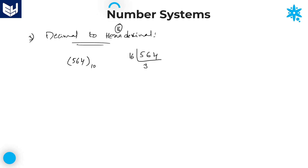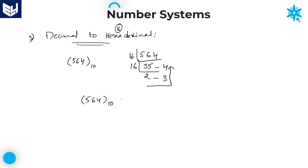564 divided by 16 is 35 remainder 4. Then 35 divided by 16 is 2 remainder 3. Write the remainders from bottom to top. So 564 base 10 equals 234 base 16. This is the way of converting a decimal number to a hexadecimal number.